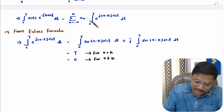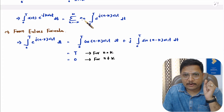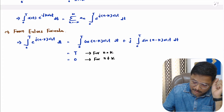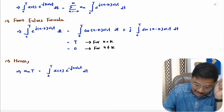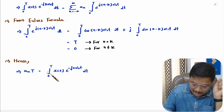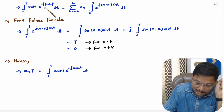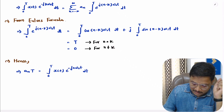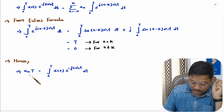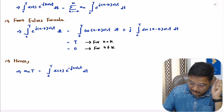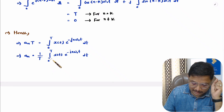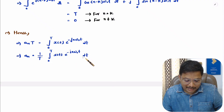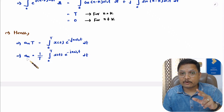So capital T can be placed here. If you want the value of a(n), we just need to account for that T, giving us a(n) into T equals the integral from 0 to T of x(t) e to the power minus jn omega naught t dt. Taking T to the other side, a(n) equals 1 by T times the integral from 0 to T of x(t) e to the power minus jn omega naught t dt. Using this equation, we can identify the Fourier series coefficient that explains the magnitude of a given frequency component.